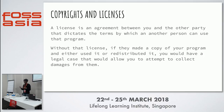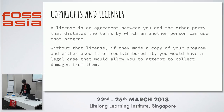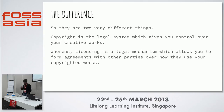An open source license means the code can be redistributed and used by anyone without restrictions — Apache license is one example. Without a license, if someone makes a copy of your program and uses or redistributes it, you have legal recourse to collect damages. So copyrights are the legal system giving you control over your creative works, whereas licensing is a legal mechanism allowing you to form agreements with other parties on how they use that copyrighted work.